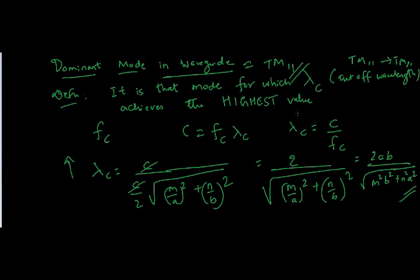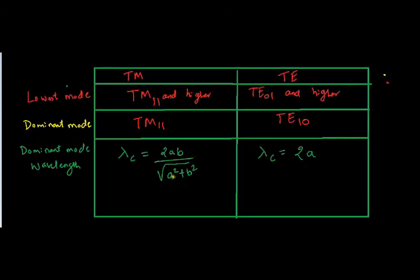This is a table for comparison of TM waves and TE waves in a waveguide. As you can see, the lowest mode which is possible for TM waves in a waveguide is TM11, whereas for transverse electric waves the lowest mode is TE01 and higher. Also, the dominant mode is TM11, which we just found out. In the same manner, for TE waves the dominant mode is TE10 and not TE01, because the value of a is greater than b.